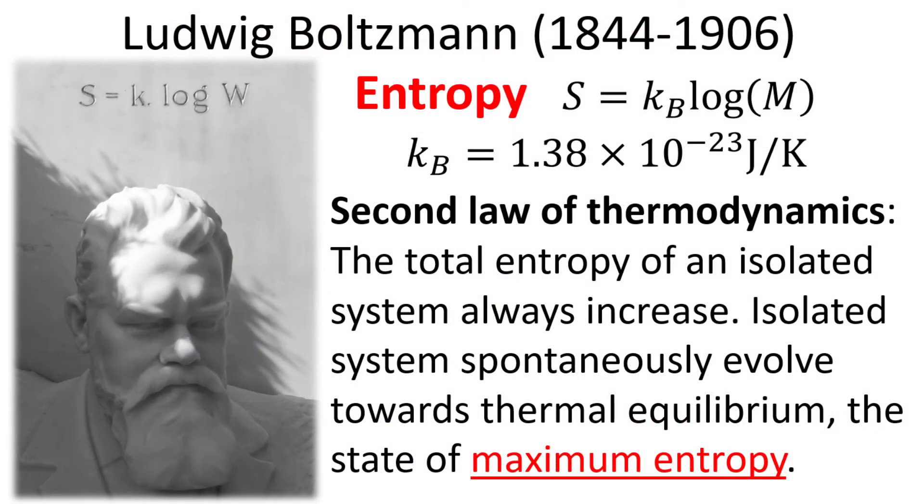In order for us to proceed to the next step, we need to first borrow an equation from Ludwig Boltzmann's tombstone. Here, the entropy S has a definition in terms of the number of microstates, given by k_B, the Boltzmann constant multiplied by the natural log of the system multiplicity M.